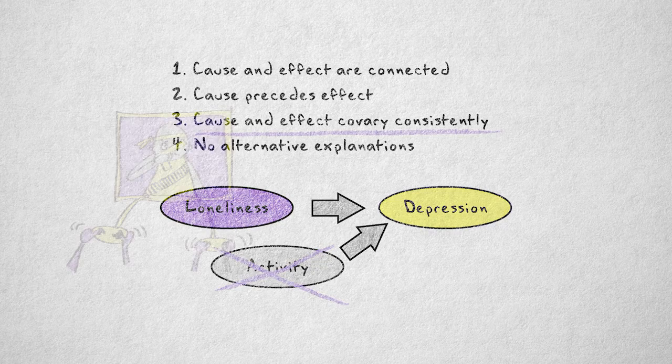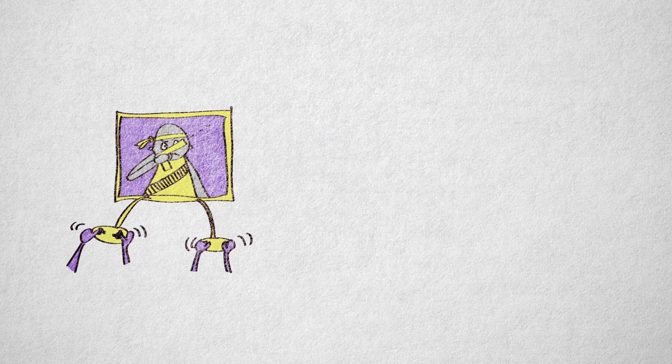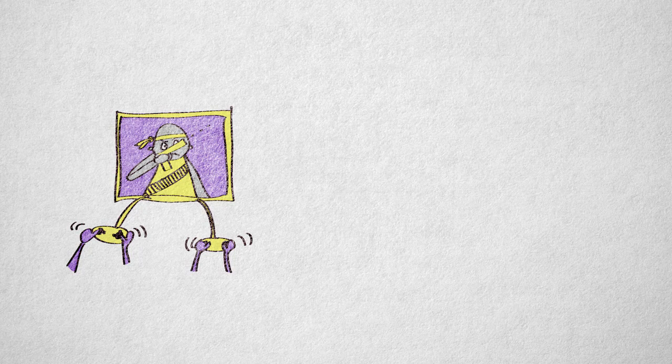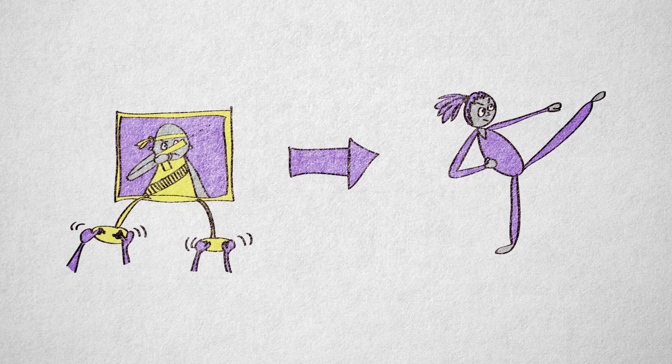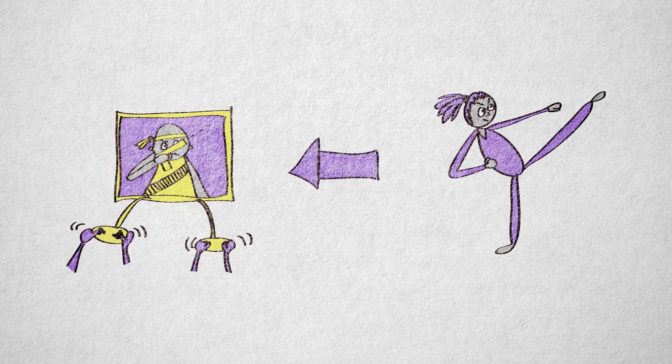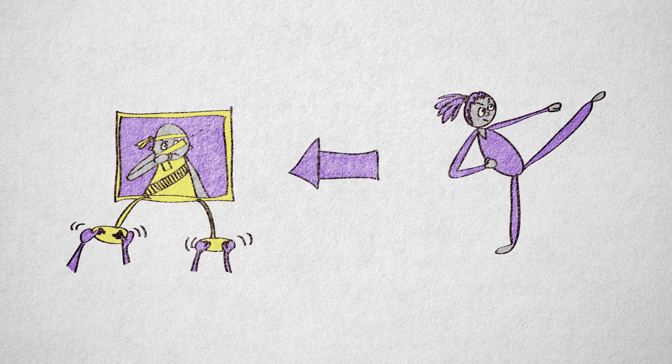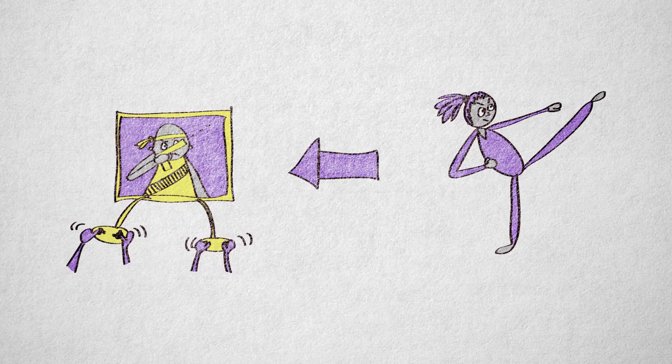I'll give you an example. If we consistently observe aggressive behavior after children play a violent video game, this doesn't mean the game caused the aggressive behavior. It could be that aggressive children seek out more aggressive stimuli, reversing the causal direction. Or maybe children whose parents allow them to play violent games aren't supervised as closely. Maybe they're just as aggressive as other children. They just feel less inhibited to show this aggressive behavior.